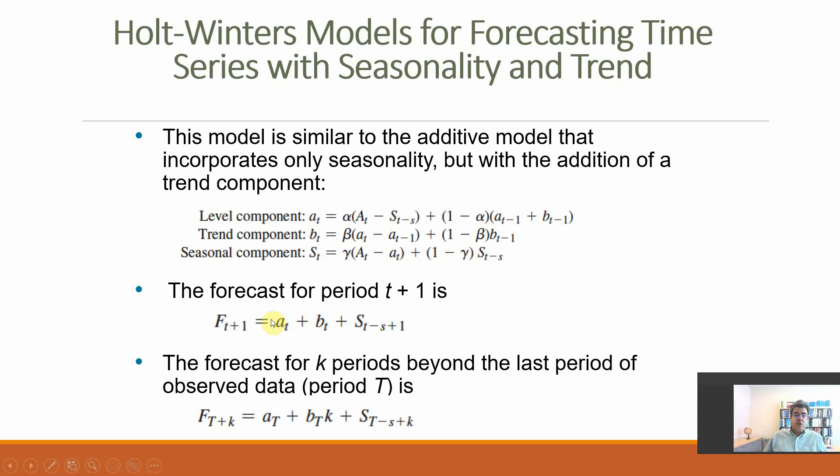And then for the forecast, we combine all of them. And if we are forecasting more than one period, for instance, working with monthly data, and I want to forecast two months ahead instead of one, then it's the actual or the last actual number plus B T times K. K is the number of months ahead, so the first month will be times one, second month times two, plus ST minus S plus K.